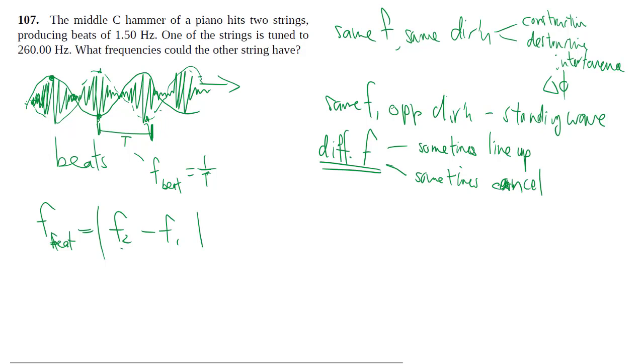We're told that one of these strings is at 260 Hertz and the other one is 1.5 Hertz different from that. But of course it's possible to be 1.5 more or 1.5 less. So the frequency of the second string is going to be 260 Hertz plus or minus 1.5 Hertz, because in both cases you'll get a beat frequency of 1.5 because of the absolute value sign.